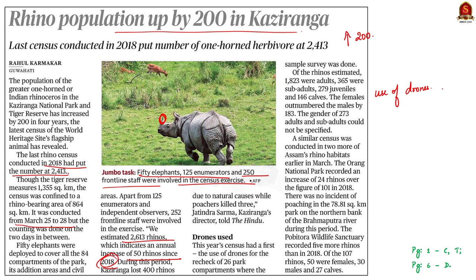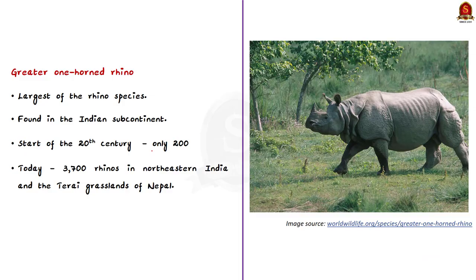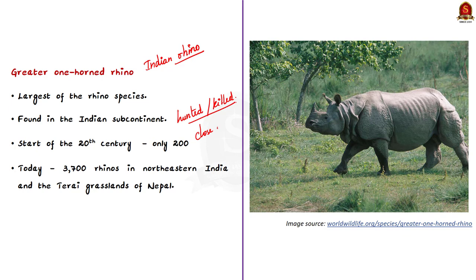In this context, let us discuss about the one-horned rhino from a prelims point of view. The greater one-horned rhino, or the Indian rhino, is the largest of the rhino species and is found only in the Indian subcontinent. Once it was widespread across the entire northern part of the Indian subcontinent, but the rhino's population went down as they were hunted for sport or killed as agricultural pests. This pushed the species very close to extinction, and by the start of the 20th century, only 200 wild greater one-horned rhinos remained.